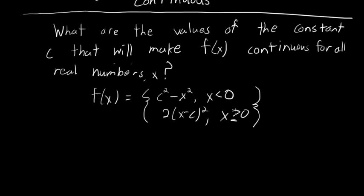For x greater than or equal to 0, we're dealing with another polynomial function. Regardless of what c is, we will have another polynomial function here. It's going to be continuous for all values of x, so it's certainly continuous for those values greater than or equal to 0.